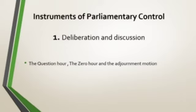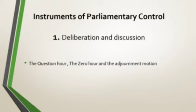The first instrument or method is deliberation and discussion. In this category, we consider three main sub-categories: Question Hour, Zero Hour, and Adjournment Motion. These are three different ways in which the opposition or any other member of the House can ask questions to the ruling party or executive, that is, the Council of Ministers. The Question Hour is held every day during the session of Parliament, where ministers have to respond to searching questions raised by the members.